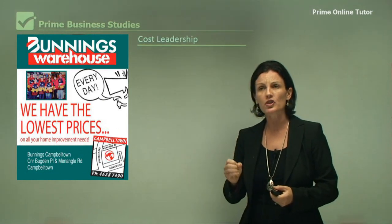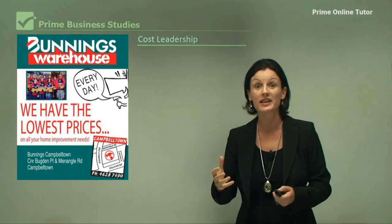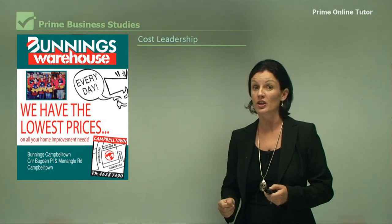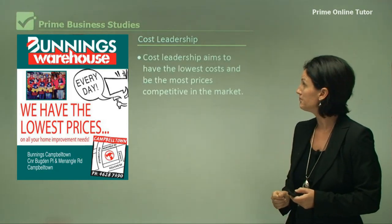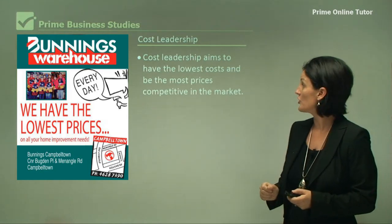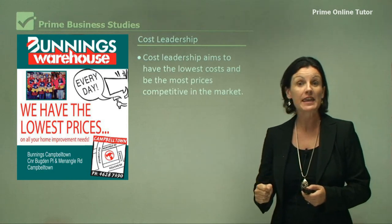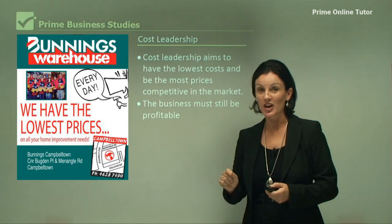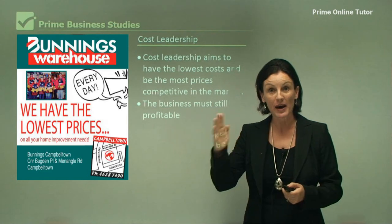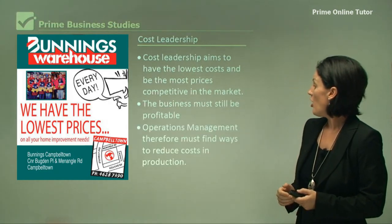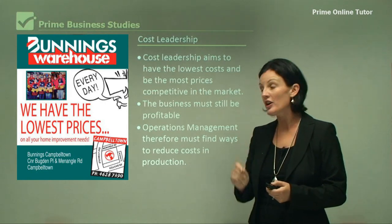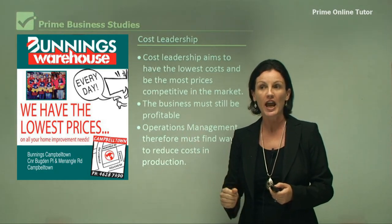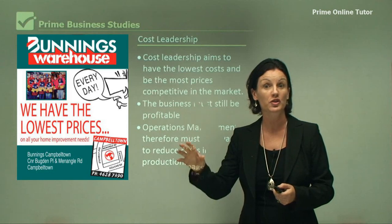Now one of the strategic roles of businesses is to come up with plans or ideas to make their product better. One of the strategies used by a lot of operations managers is called cost leadership. Cost leadership is when you have the lowest cost and you're the most price competitive in the marketplace. However, you must also be profitable. So it's a very difficult dilemma — you're trying to cut costs but also be profitable. Operations management therefore must find ways to reduce their cost in production, and they must analyse every single step of their production to find ways to reduce that cost.